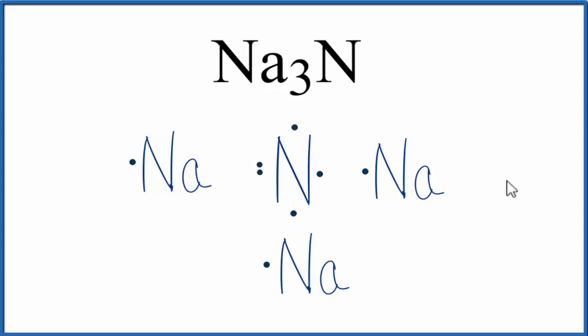So because this is an ionic compound, the sodium is going to transfer its valence electron to the nitrogen. When it does that, it's lost a negative charge. Since it's lost a negative charge, it's now positive. Each sodium will do this.